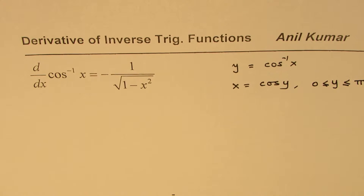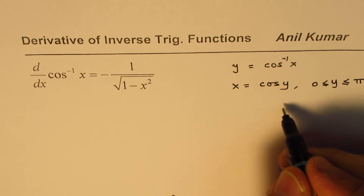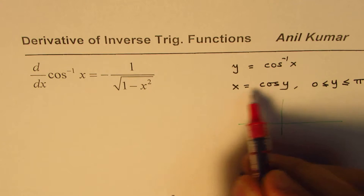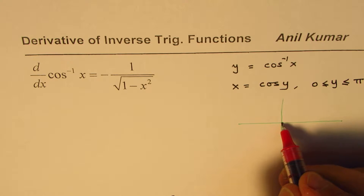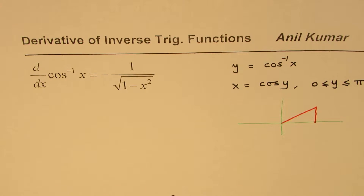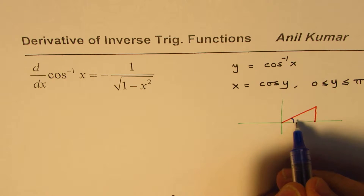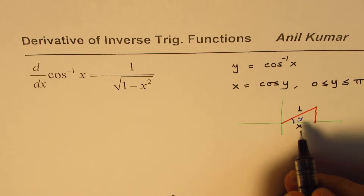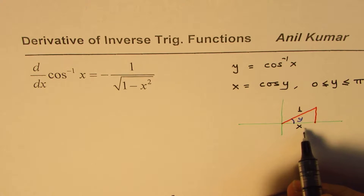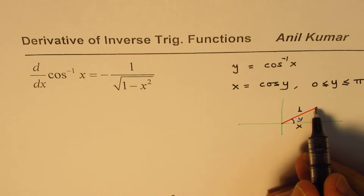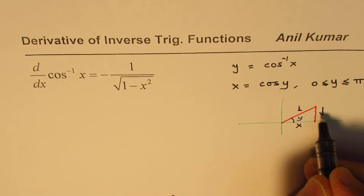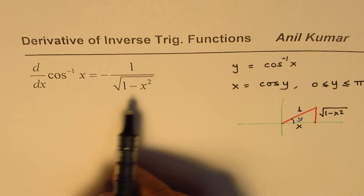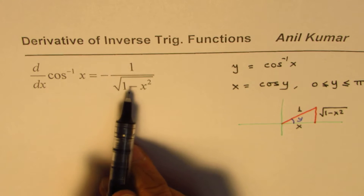You should remember that y is in radians between 0 to pi. Now, based on what we have — that is x equals to cos y — we can make a triangle and give it a picture. When I say that cos y is x, it really means that the ratio of adjacent side to hypotenuse is x. So if this angle is y, the ratio of adjacent side to hypotenuse is x over 1. From here, you can find the dimension of the opposite side, which will be square root of 1 minus x squared.